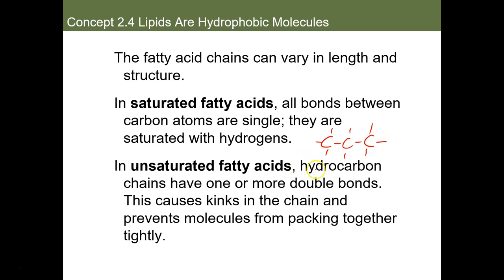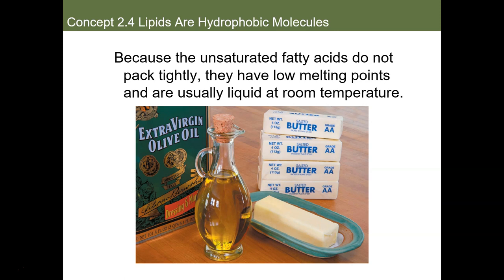Unsaturated fatty acids are hydrocarbons that have double bonds here and there. Because carbon can only bond four times covalently, a carbon in a double bond can only form two additional bonds, and the adjacent carbon can only form one additional bond. This creates a situation where there's less hydrogen taking up space, allowing the molecule to form kinks. Unsaturated fatty acids are loose and have very low melting points, so they are typically liquids.